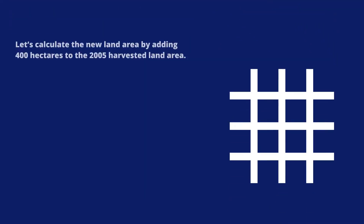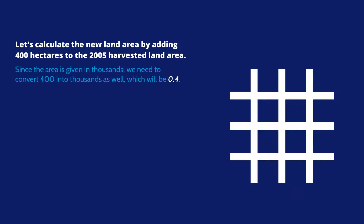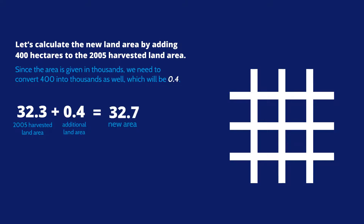Now let's calculate the new land area by adding 400 hectares to the 2005 harvested land area. Since the area is given in thousands, we need to convert 400 into thousands as well, which will be 0.4. The new area is then 32.3 plus 0.4 thousand hectares, which adds up to 32.7 thousand hectares.